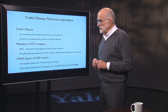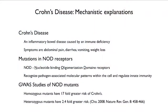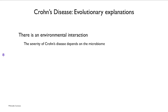Genome-wide association studies have found mutations in the genes that produce the NOD receptors. A homozygous mutant for this gene has a 17-fold greater risk of Crohn's, and heterozygous mutants have a 2.4-fold greater risk. So it's clear that there are important genetic effects. But if we look at the environmental interaction, we can see that the severity of the disease also depends on the microbiome.